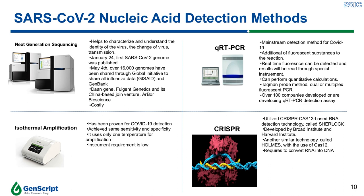The sequencing of the viral genome using next-generation sequencing in combination with epidemiology data helps us characterize and understand the identity of the virus, and lets us know how the virus is changing and how it is being transmitted. On the 24th of January, the first SARS-CoV-2 genome was published in the New England Journal of Medicine. As of 4th of May, over 16,000 genomes had been shared through the GISAID and GenBank databases to help researchers in their studies as well as drug and vaccine development.